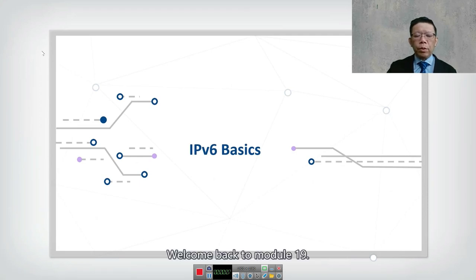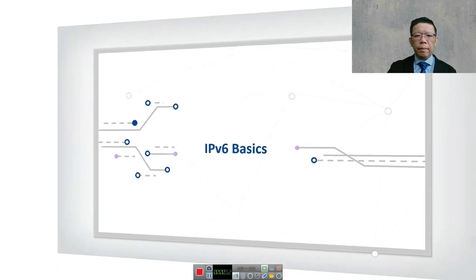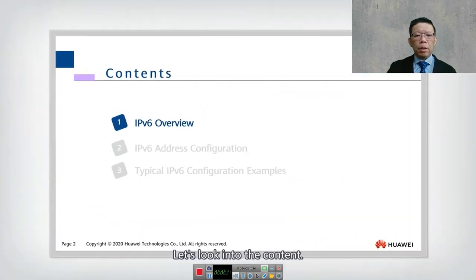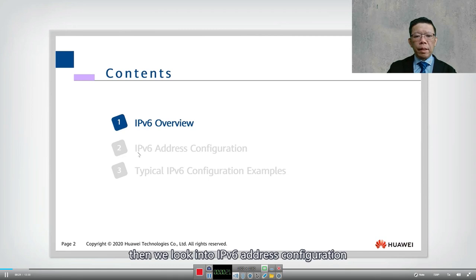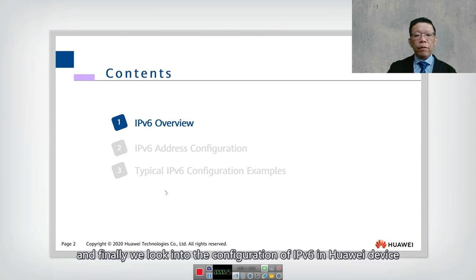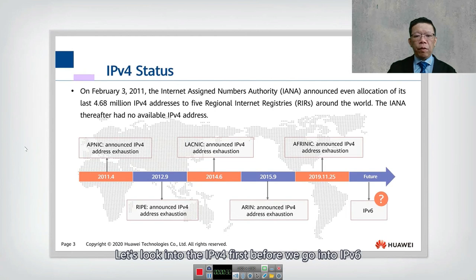Hello, welcome back to module number 19. This module will look into IPv6 basics. We have three chapters: first we look into IPv6 overview, then IPv6 address configuration, and finally the configuration of IPv6 in Huawei devices.